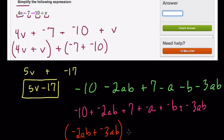Then variables usually come next. Negative a has no other like terms, negative b is all alone, and then plus 7 and plus negative 10. And then it's one last step.